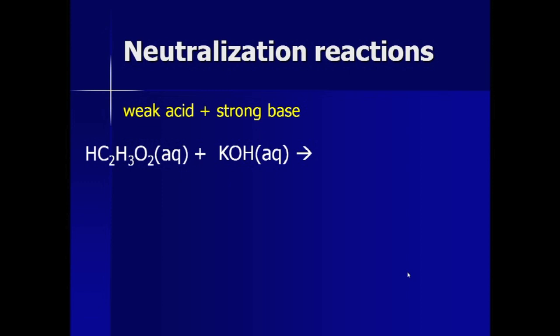Acetic acid is a weak acid, so most of it does not dissociate, so I'm going to keep it as one molecule. Potassium hydroxide is highly soluble and a strong base, so that can be dissociated right away.